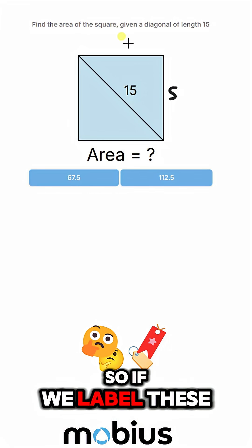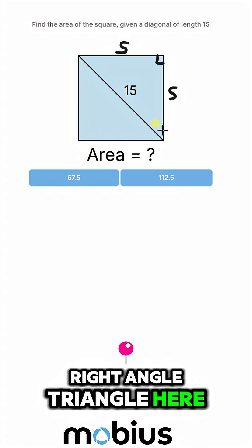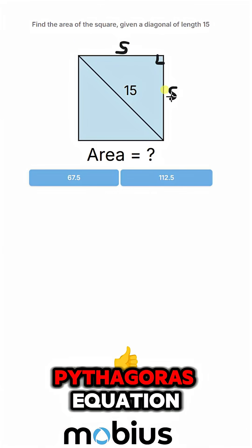So if we label these as our sides, we can see it's a square. So we've got a right angle triangle here. So we've got a perfect Pythagoras equation.